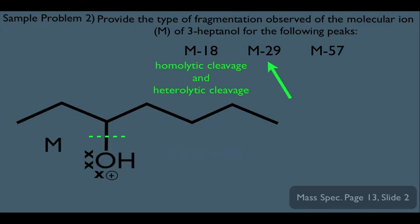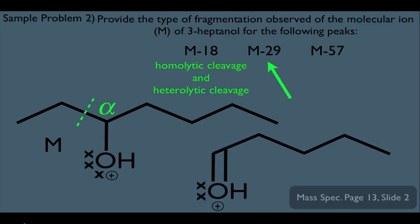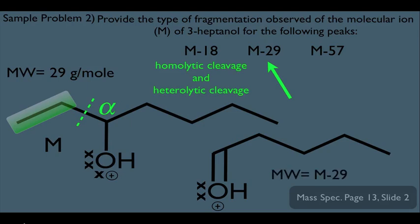So the M minus 29 peak could not be due to heterolytic cleavage. But remember, we also learned that alcohols can alpha cleave. Let's try to do that — let's locate our alpha carbon right here. We can cut either side, so let's try to cut the left-hand side and think of our quick product method. It's the right-hand side that would have the alpha carbon doubly bonded to the oxygen. This is the fragment we would see on the mass spec, which means this fragment lost this two-carbon fragment, which happens to weigh 29 grams per mole. So the fragment detected would weigh M minus 29, and the type of fragmentation observed is homolytic cleavage — because it's alpha cleavage.